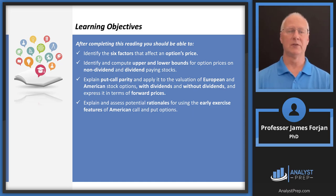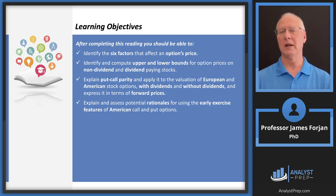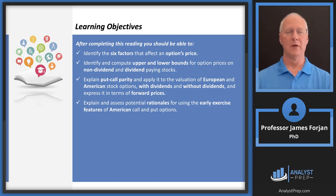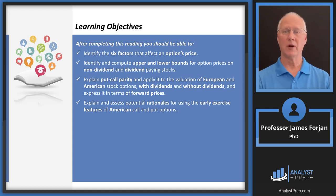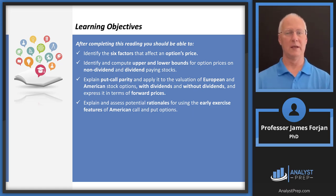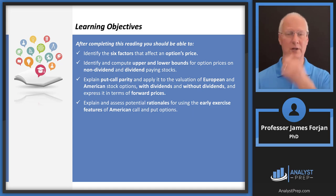We'll do upper and lower bounds — what's the best case scenario, what's the worst case scenario. What's even more important than understanding upper and lower bounds, look down at the last learning objective. We'll need our upper and lower boundaries to understand those potential rationales. And then we'll talk about one of my favorite models, put-call parity, which links the equity markets, the fixed income markets, and the derivative markets. Based on rudimentary economics, we know that trading in one market influences what goes on in other related markets.